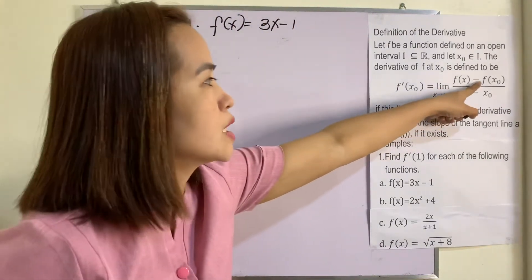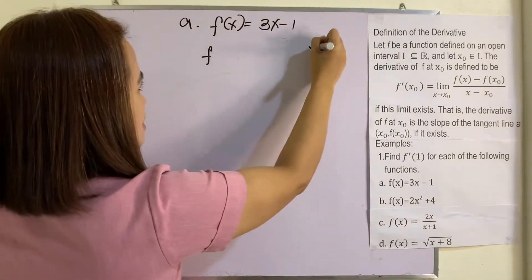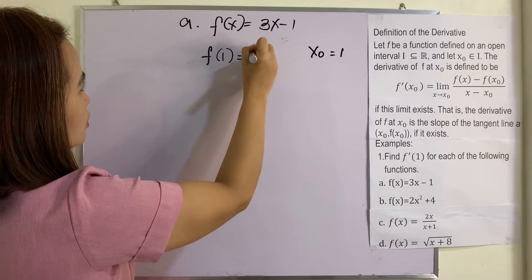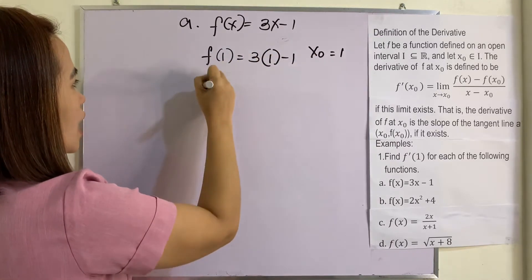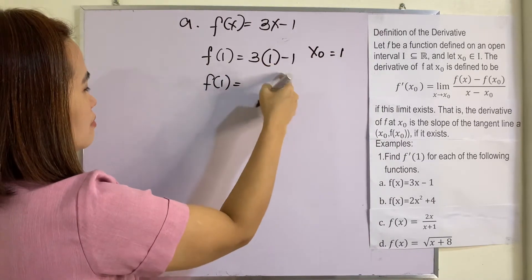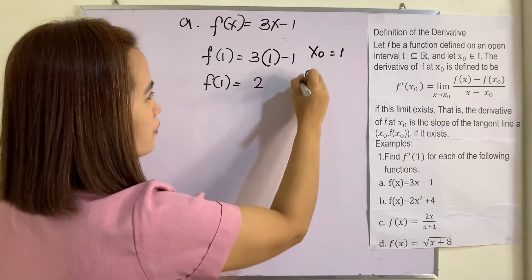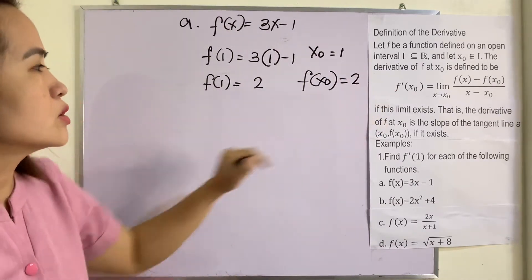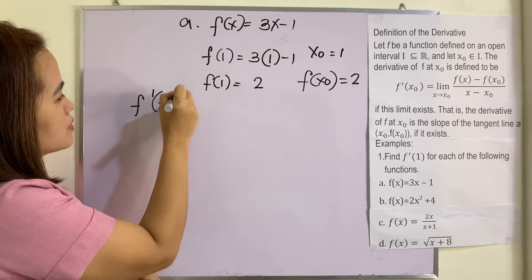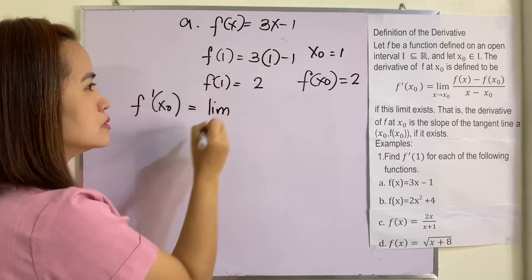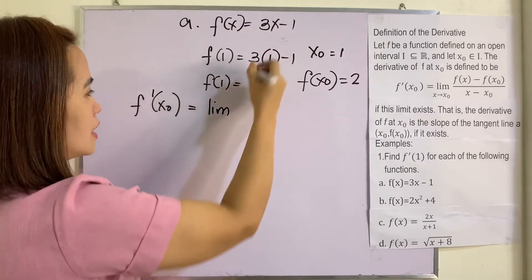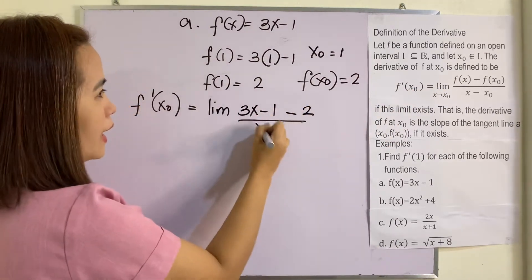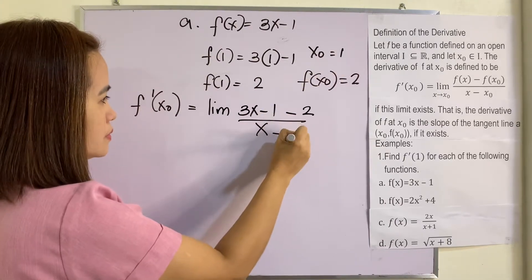Based on the definition, we need to get f of x sub zero. Our x sub zero is equal to one, so f of one is equal to three times one minus one. f of one equals three minus one, which is two. So our f of x sub zero is equal to two. Going back to the definition, f prime of x sub zero is equal to the limit of f of x — that is 3x minus one — minus f of x sub zero which is two, over x minus x sub zero which is one.